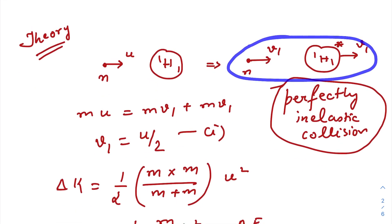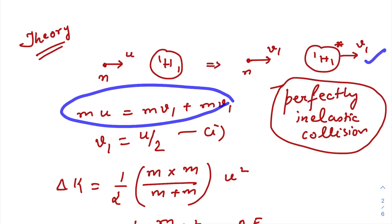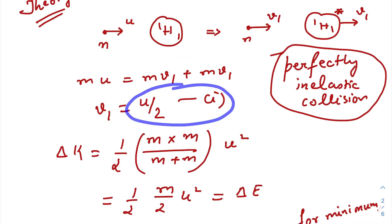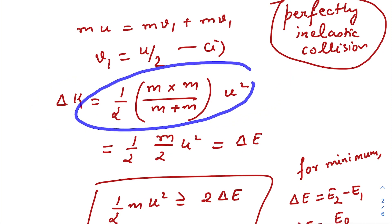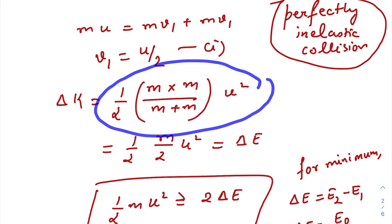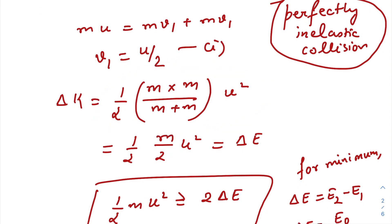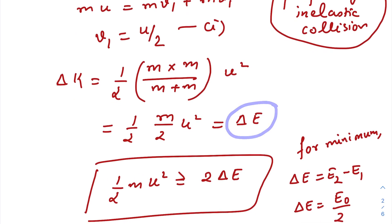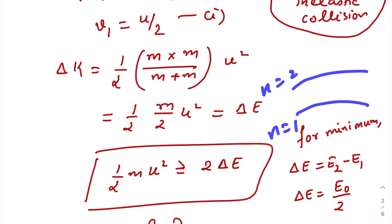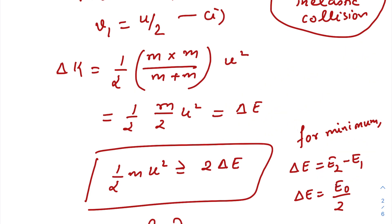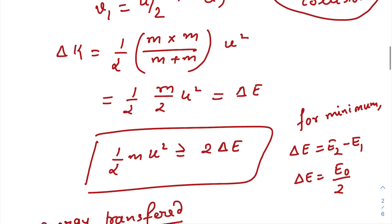After a perfectly inelastic collision, both particles gain the same velocity, conserving momentum. The final speed of both particles will be u/2. The loss of kinetic energy in this collision is utilized to excite the hydrogen atom. Now, to excite the hydrogen atom from the ground state, the minimum energy must move the electron from n=1 to n=2, so ΔE must equal E₂ − E₁.